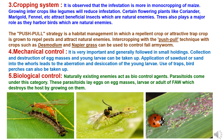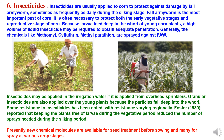The fifth method is biological control. Naturally existing enemies act as biocontrol agents. Parasitoids come under this category — these parasitoids lay eggs on egg masses, larvae, or adults of Fall Army Worm, which destroys the host by growing on them.